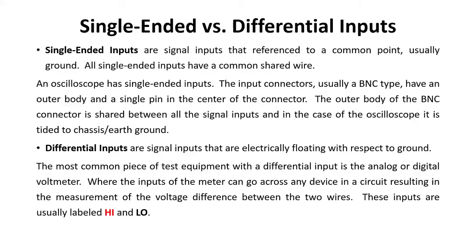I should go into the differences between a single-ended and a differential input. Single-ended inputs are usually signal inputs that have a common point or common reference, usually ground, and a prime example of that would be an oscilloscope. The oscilloscope usually has a BNC connector on it, and the outer body of that connector is tied to the chassis ground. So if you have a two-channel oscilloscope, both outer bodies are tied to the same point, chassis ground. Same thing for a four-channel oscilloscope.